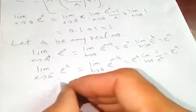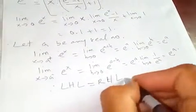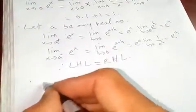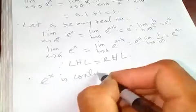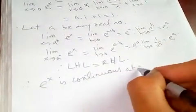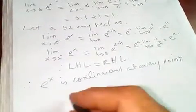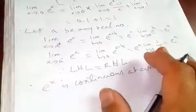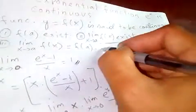The left-hand limit is equal to the right-hand limit, so e to the x is continuous at every point — meaning for every real number a, the function is continuous.